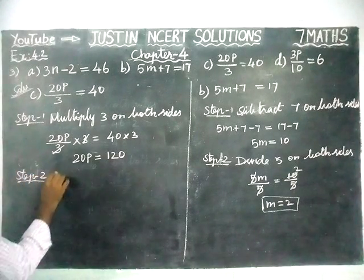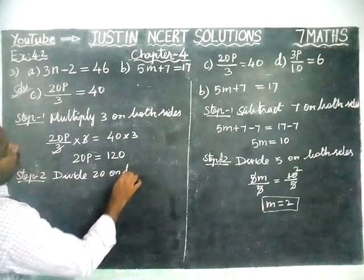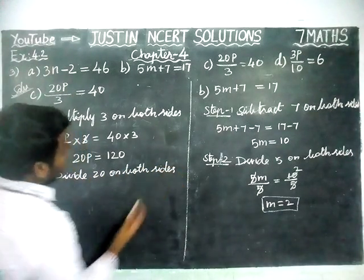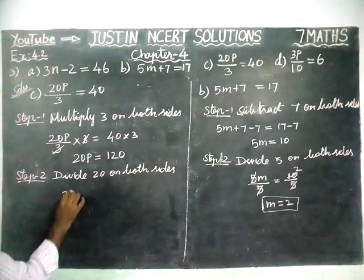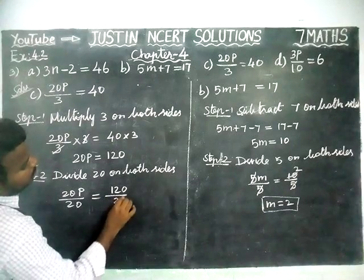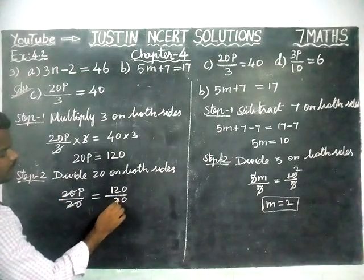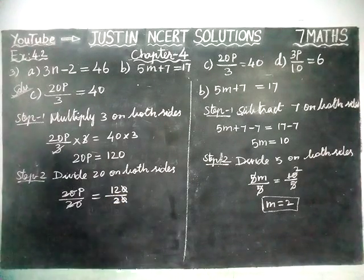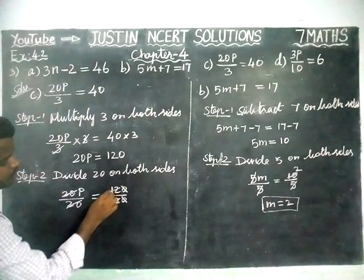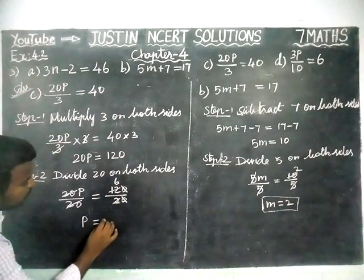Now in step 2, we have to cancel this 20. Since it is in multiplication, we are going to divide by 20 on both sides. So 20p divided by 20 is equal to 120 divided by 20. The 20s get cancelled, and 120 divided by 20 equals 6. So the value of p is equal to 6.